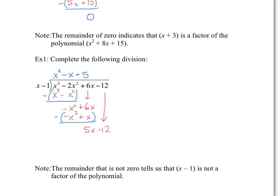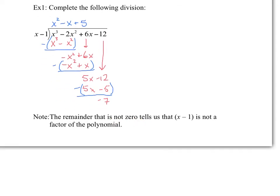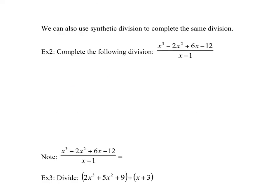Multiply 5 by x and 5 by negative 1 to get 5x minus 5, then subtract. 5x minus 5x is 0, and negative 12 minus negative 5 is negative 7. There is a remainder of negative 7, so the answer has a remainder. This remainder that is not 0 tells us that x minus 1 is not a factor of this polynomial — if it were, the remainder would be 0.